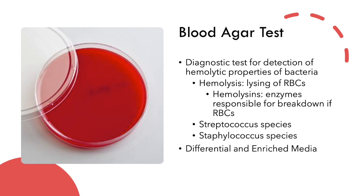Streptococcus in particular carry out three different types of hemolysis: alpha, beta, and gamma.